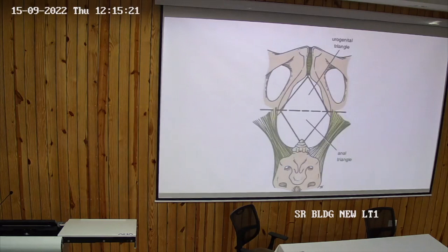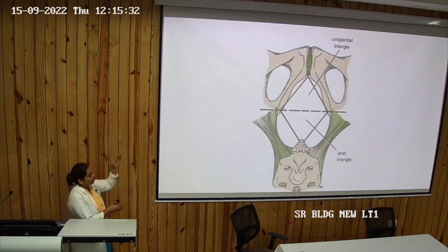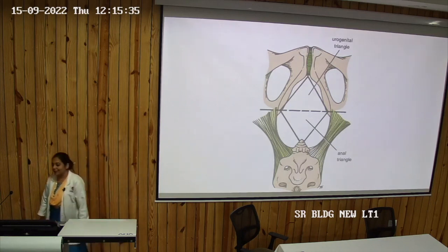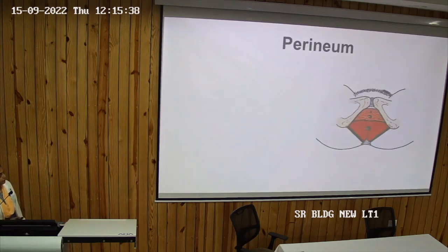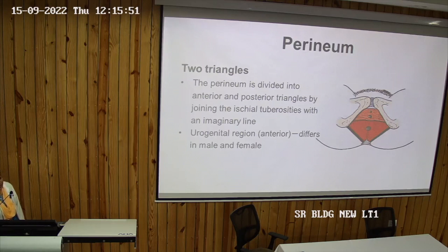So this diamond-shaped region at the lower end of the trunk is known as the perineum. It is divided by an imaginary line passing through the two ischial tuberosities into an anterior and a posterior triangle. The anterior triangle is known as the urogenital triangle and the posterior triangle is known as the anal triangle.